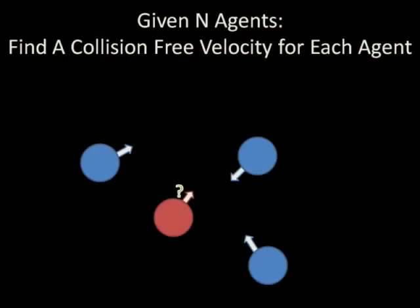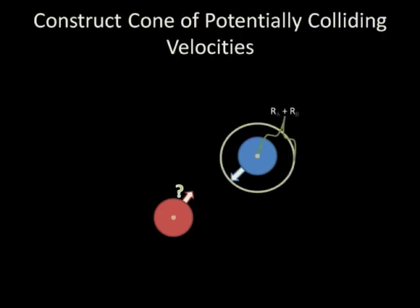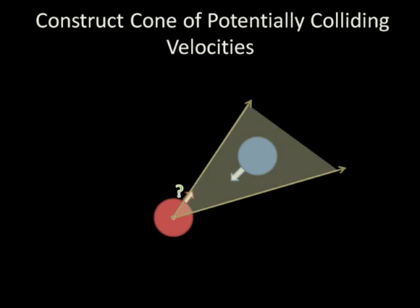The goal of this algorithm is to find a collision-free velocity for each agent. The current agent, shown in red, picks one of its neighboring agents and computes the set of all velocities which would collide with that agent if it were to stay still. The set of all such velocities forms a cone called a velocity obstacle.